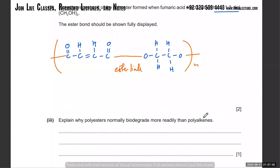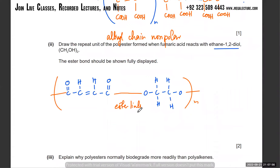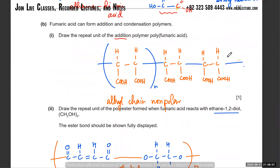Explain why polyesters normally biodegrade more readily than polyalkenes. These carbon chains are non-polar - the carbon chain is really, really stable and it's pretty hard to actually break it down. What happens is that the alkyl chain is normally non-polar and won't attract other molecules, while the ester link is highly polar. The carbon chain is polar at the ester part - some molecules might react there but the chain itself will not break.